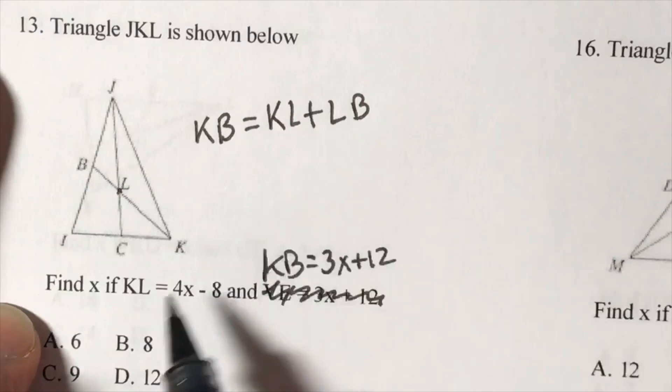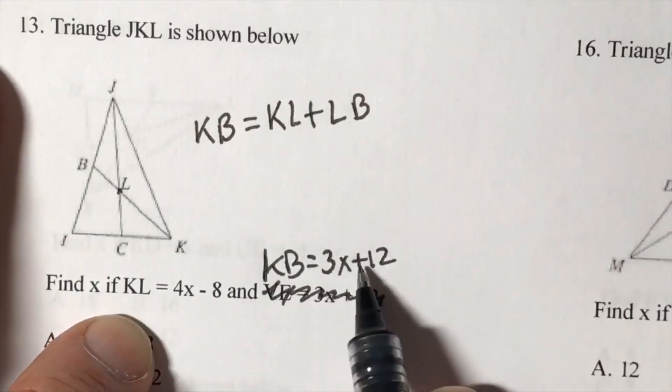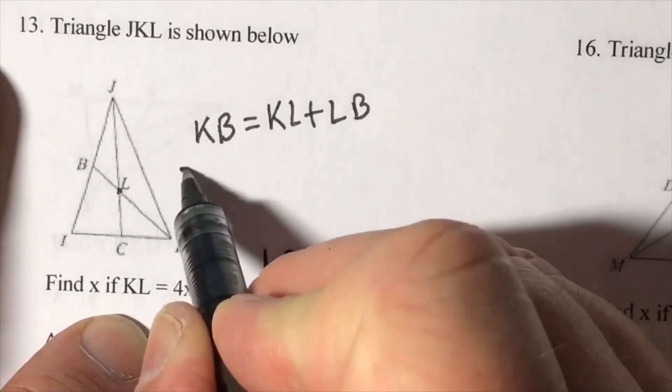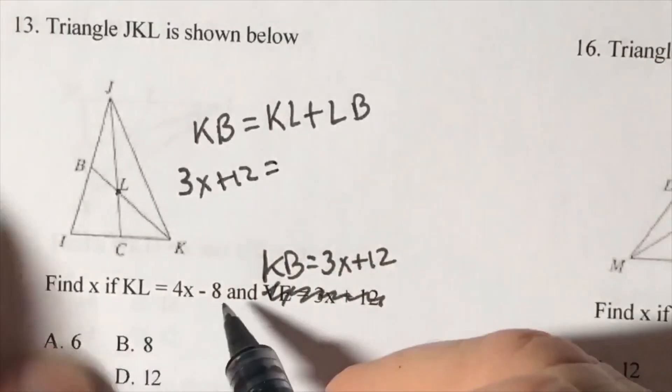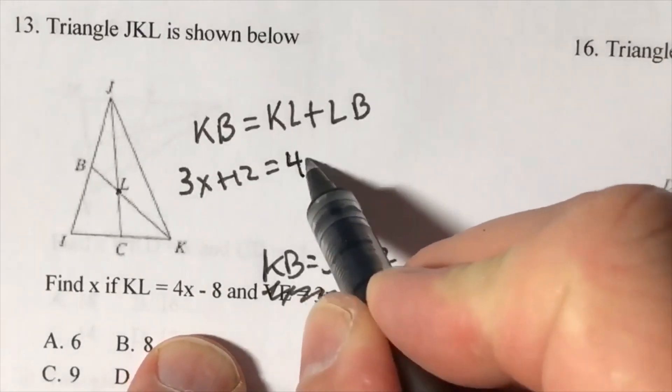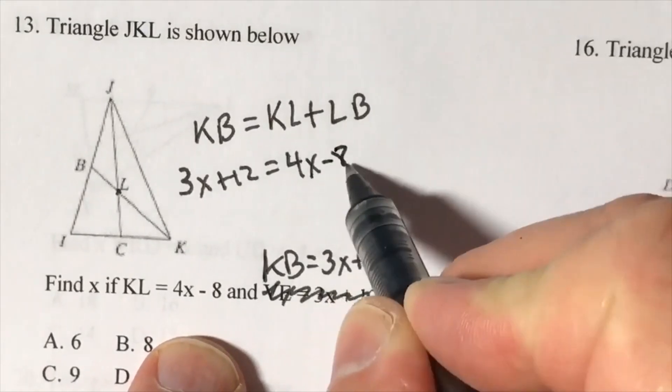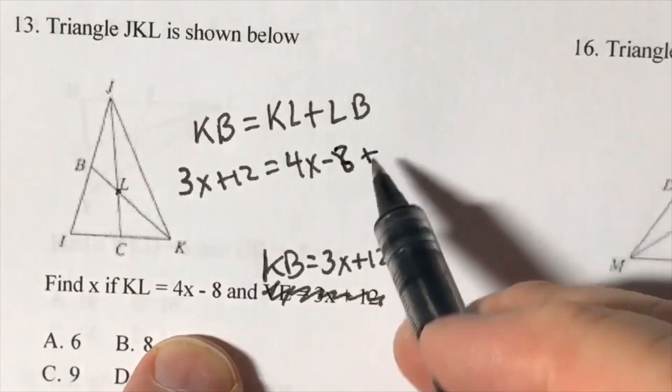When we're given KL and the entire length of the median, let's set up the equation: 3x + 12 equals 4x - 8 plus...